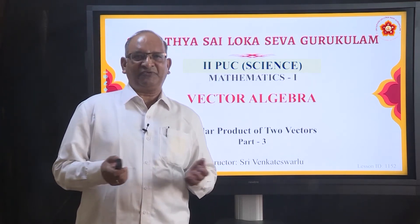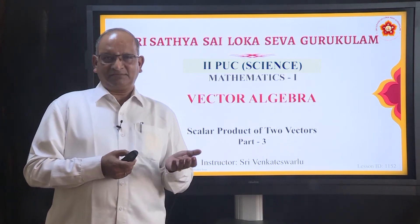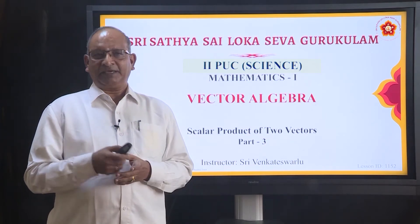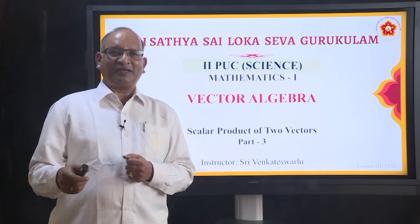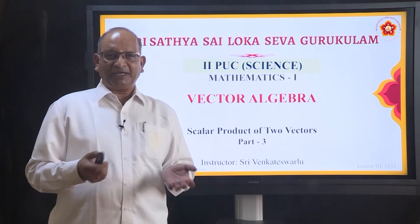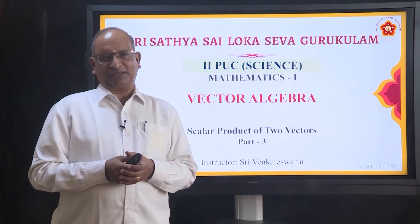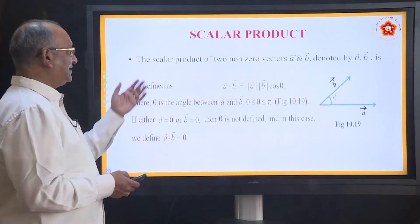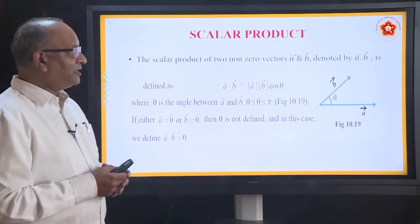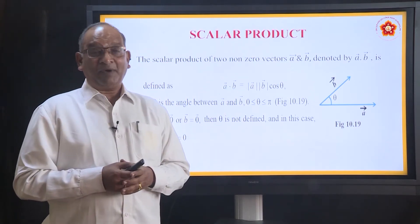What is the difference? The difference is very simple. In the first, the product of two vectors is a scalar quantity. In the second, the product of two vectors is a vector quantity. So today we are going to study about scalar product or dot product. Here is a simple definition: the scalar product of two non-zero vectors A and B. Why non-zero?